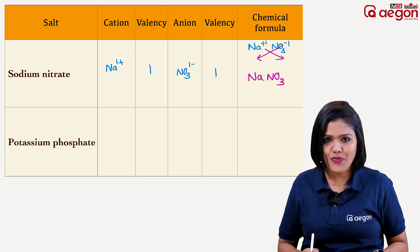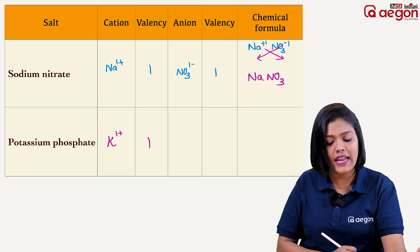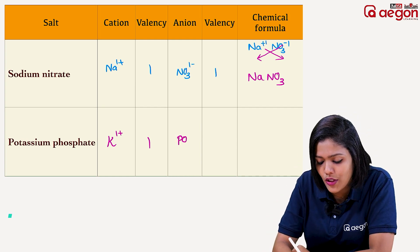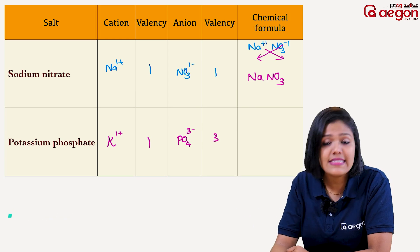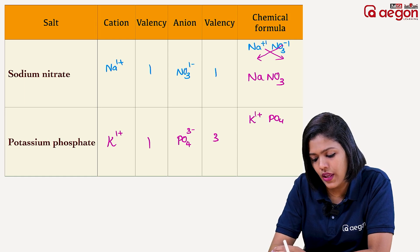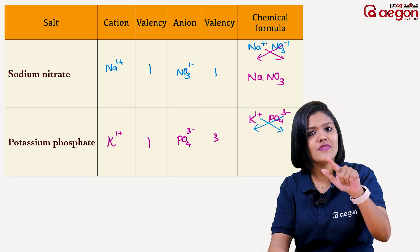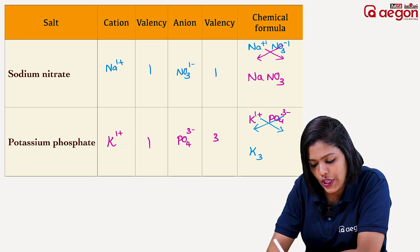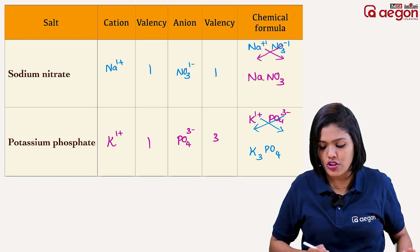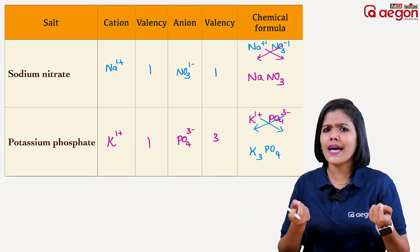This is the example of potassium phosphate. Potassium is K with a plus one charge. Phosphate is PO4 with a 3- charge. We cross multiply: potassium gets subscript 3, phosphate gets subscript 1. So the formula for potassium phosphate is K3PO4. That is the basic formation of K3PO4.